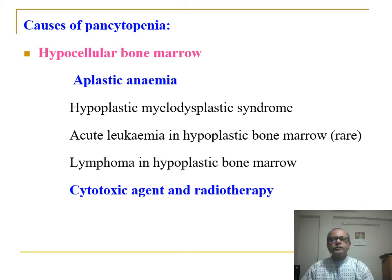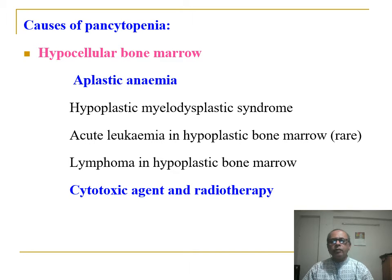What causes pancytopenia? Hypocellular bone marrow — the most common cause is aplastic anemia. Others include cytotoxic agents, radiotherapy, hypoplastic myelodysplastic syndrome, acute leukemia in hypoplastic bone marrow, and lymphoma in hypoplastic bone marrow.